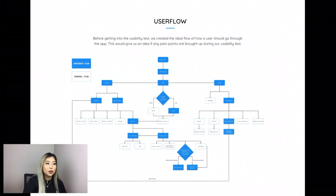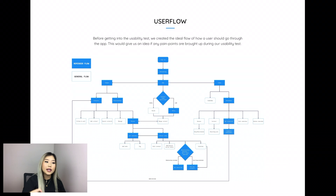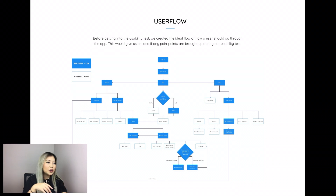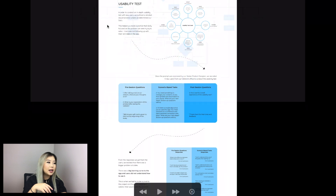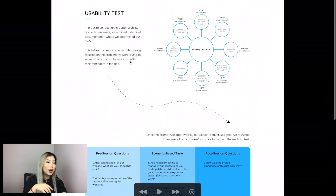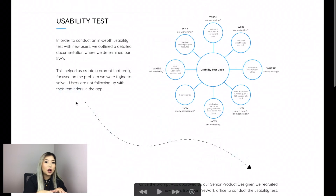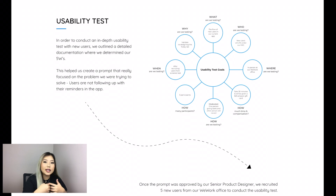We started off with user flows before the usability test, because we wanted to know what the ideal user flow would be for the user. That way, if any pain points came up during the usability test, it would be easier to see where in that flow things went wrong and fix those pain points. Once this was set, we went into creating our usability test. We didn't go straight into testing users without a good prompt — we did that with detailed documentation where we determined the five W's: who, what, when, where, and how. This helped us create a better prompt that really focused on the problem we were trying to solve.